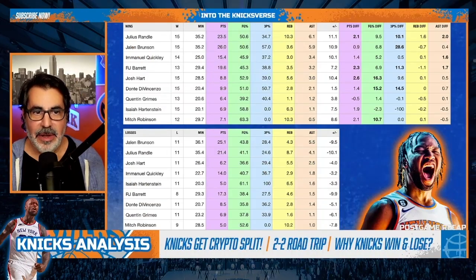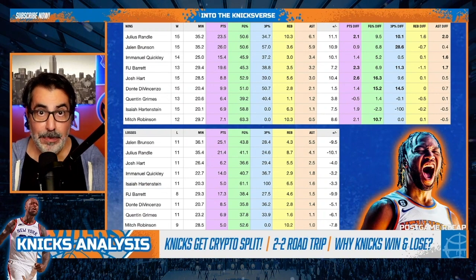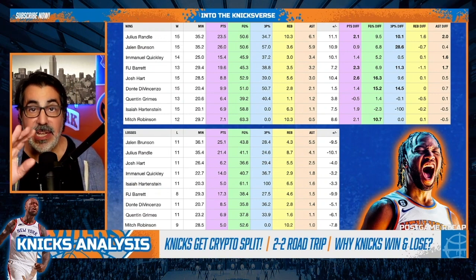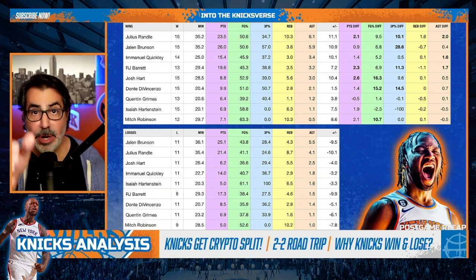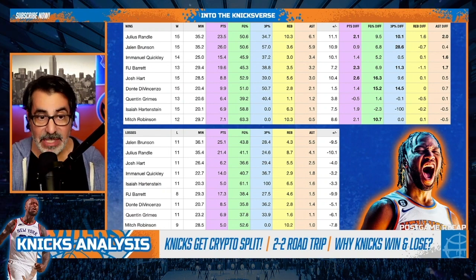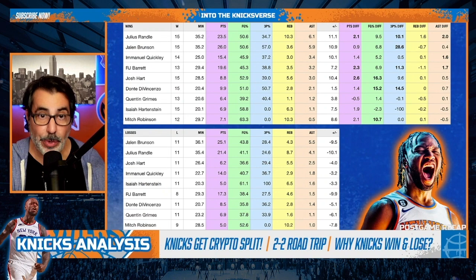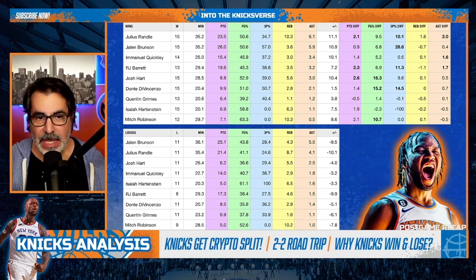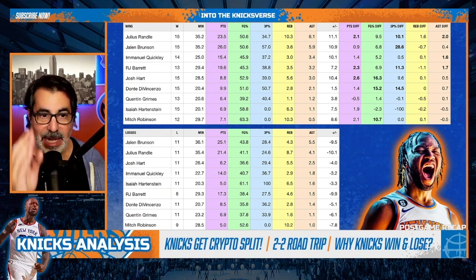Let's get into the juicy part of this video. What you're looking at here are the statistics of the rotation players broken out between wins and losses. The top row is the wins, the bottom row is losses. The columns above Jalen Brunson's head are the differentials — I'm highlighting the points differential, field goal percentage differential, three-point percentage differential, rebound differential, and assist differential. They're all connected and we're going to show you exactly how.